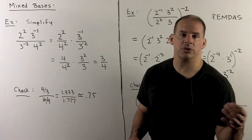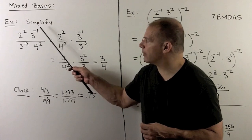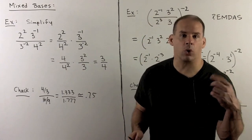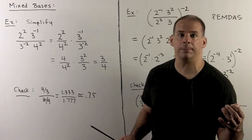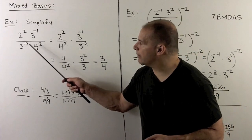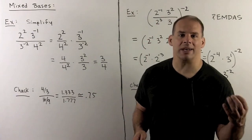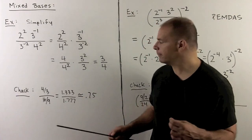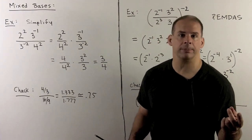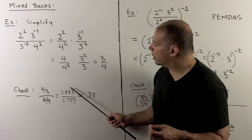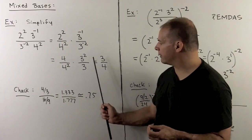We check our work using the calculator. Two squared times three to the minus one is four over three, approximately 1.333. Three to the minus two times four squared: four squared is 16, three to the minus two is one ninth, so we have 16 over nine, approximately 1.777. Putting in this fraction, we get roughly 0.75, which agrees with our answer.